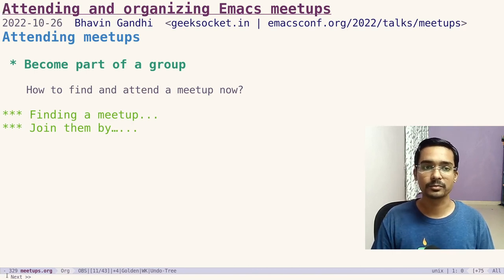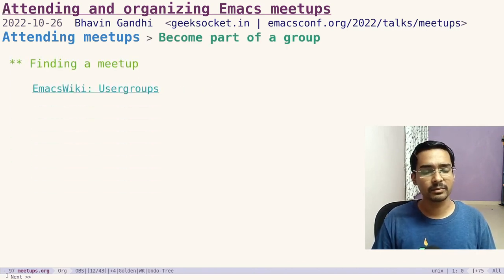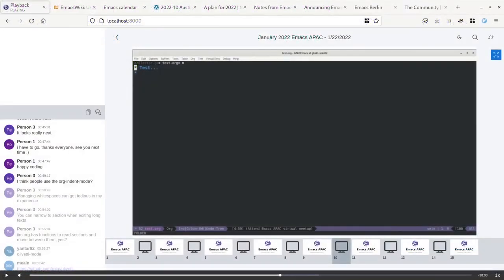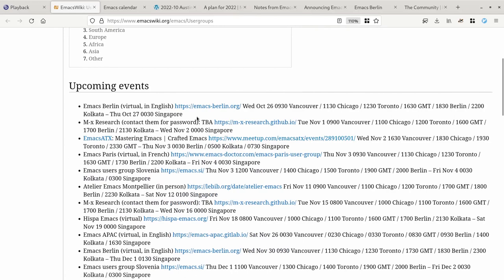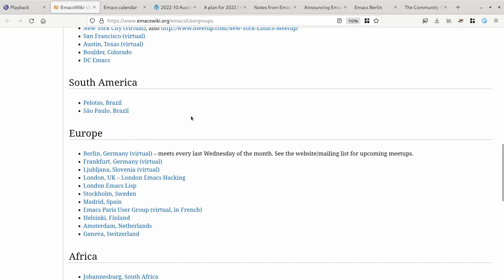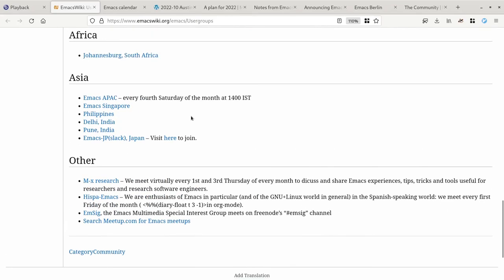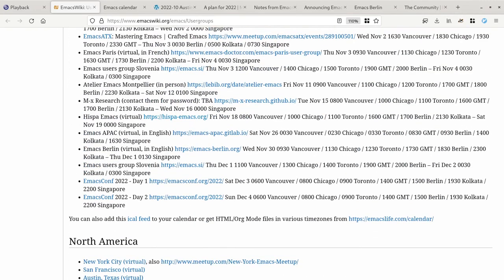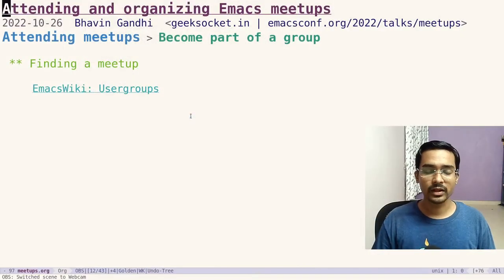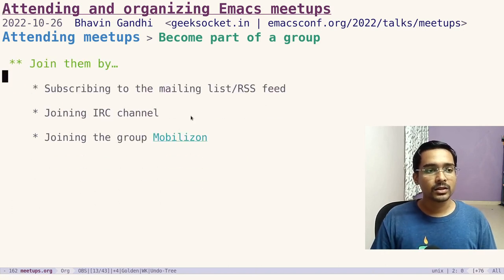How do I become part of a meetup group? The first step is finding one. There is an EmacsWiki page called User Groups, currently maintained by Leo and Sasha. That page shows all upcoming events and has a list of all the meetup groups, so you can find all the groups there.